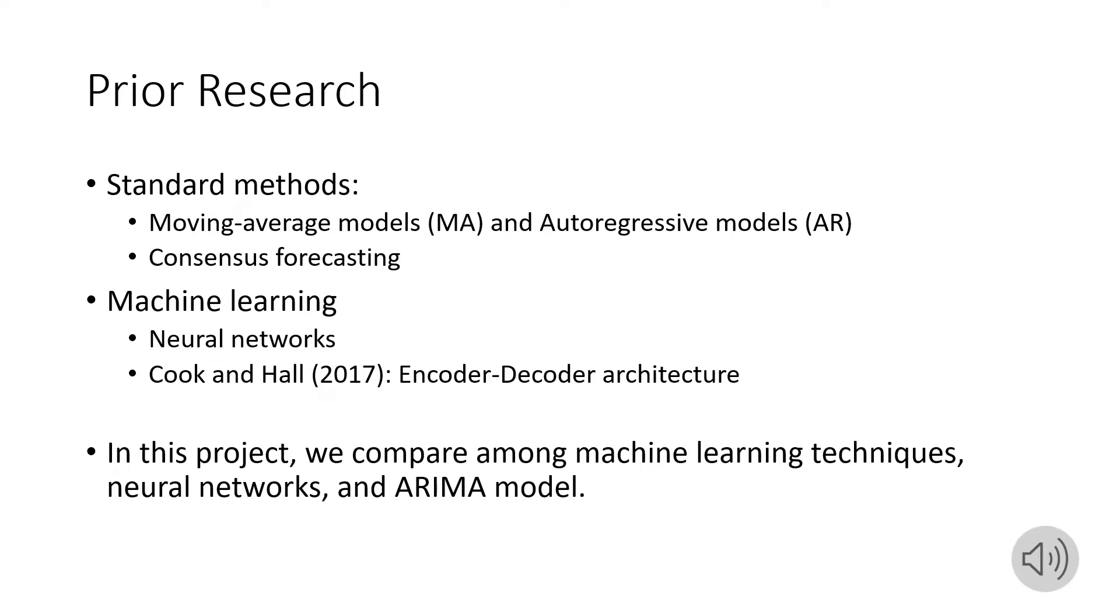Prior research basically use time-series models, so moving average models and auto-regressive models. They also used consensus modeling, which basically combines a wide range of models. More recently, people started to use machine learning, specifically neural networks. Kuhlund Hall in 2017 used an RNN encoder-decoder architecture, and they found that it outperforms all previous standard models. In this project, we will compare machine learning techniques, neural networks, and ARIMA models.